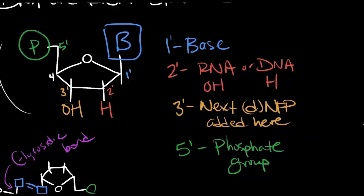The 2' carbon is what makes an RNA nucleotide different from a DNA nucleotide. RNA has an OH attached here. The D in DNA stands for deoxy, meaning we've lost the oxygen, so there is only a hydrogen here. The 3' carbon is where the next nucleotide is added. And finally, the 5' carbon, which sticks out of the ring, has a phosphate group attached to it.